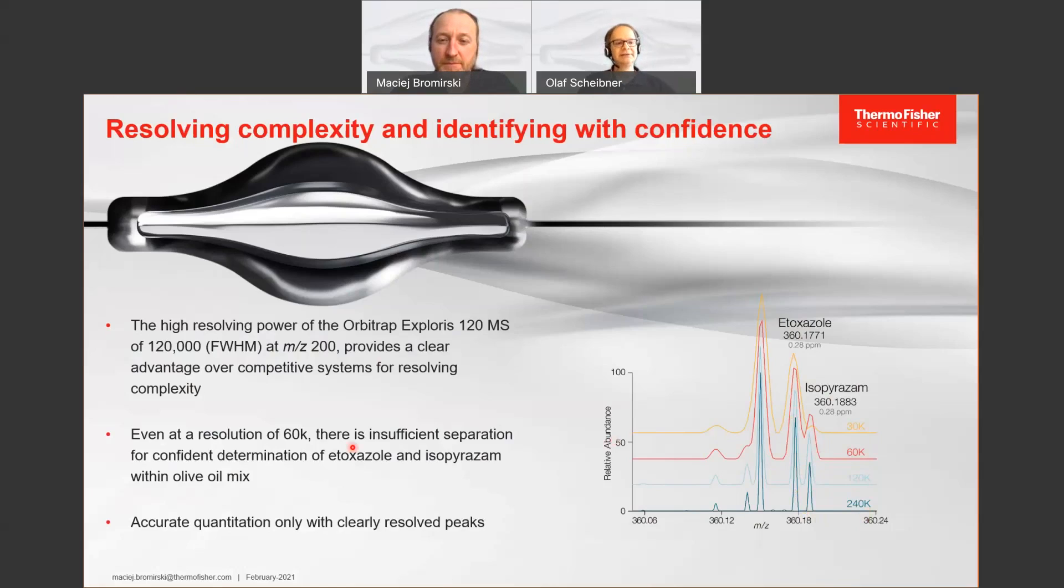And as I said already, an accurate quantitation is only possible with clearly resolved peaks. Because otherwise you're sitting on the wrong mass. You have a mixture of two peaks combining into one. And so the mass is not correct and the peak intensity is not correct. You cannot quantitate without the proper resolution. Precision and accuracy only gets complete with high resolution.